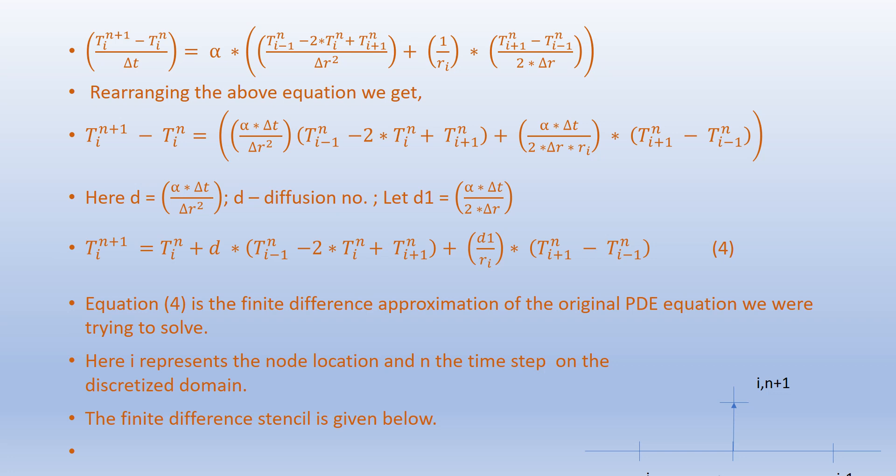Using these definitions, we get equation 4: T_i^(n+1) = T_i^n + D·[T_(i-1)^n - 2·T_i^n + T_(i+1)^n] + (D1/r_i)·[T_(i+1)^n - T_(i-1)^n]. This is the finite difference approximation of the original PDE, where i represents the node location and n the time step on the discretized domain.